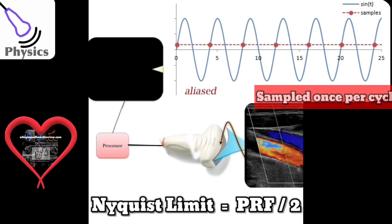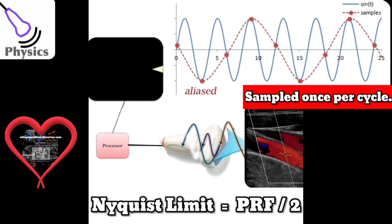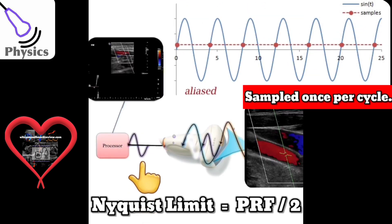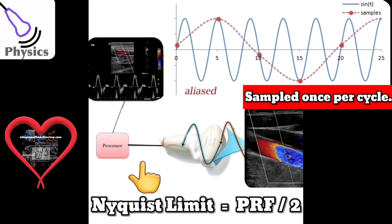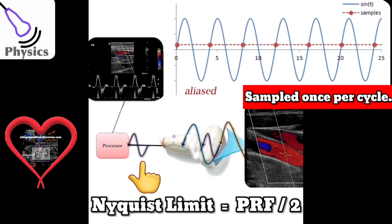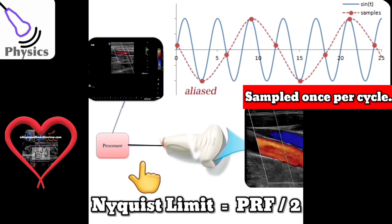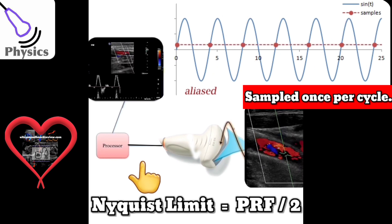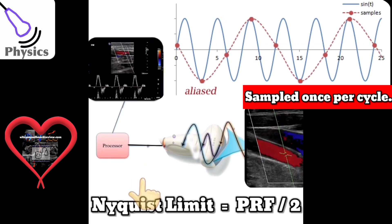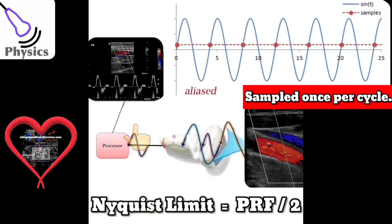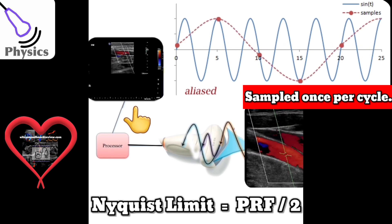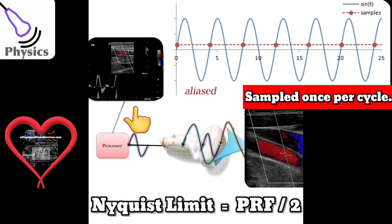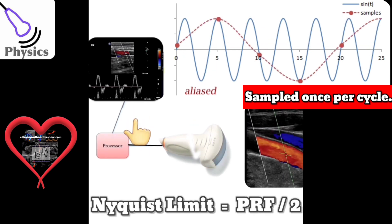In this diagram, the smaller purple waveform represents a single Doppler sample. Since this area was only sampled once, the ultrasound machine fails to capture the true Doppler velocity and forces the waveform to wrap around on itself, thus reaching and surpassing the Nyquist limit.